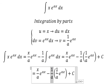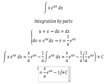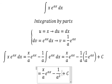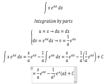So 1 over a times 1 over a gives us 1 over a squared, times e to the power of ax.